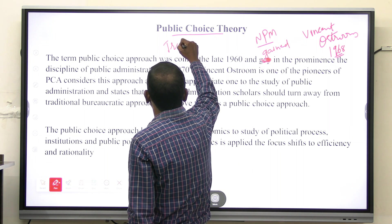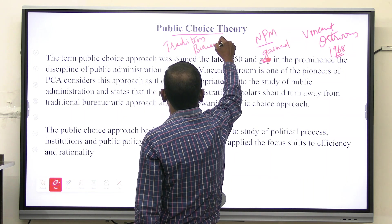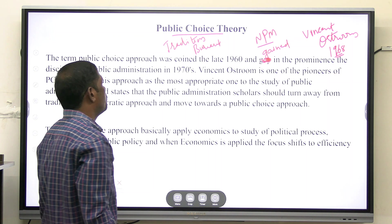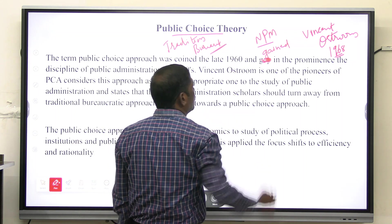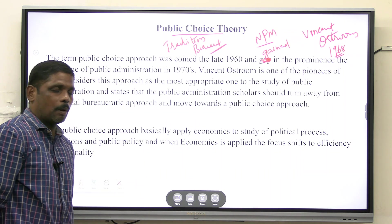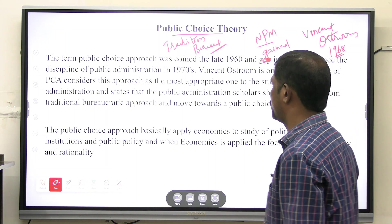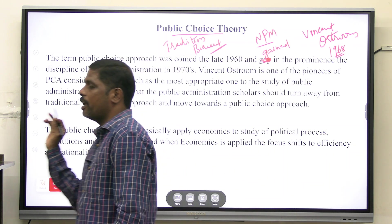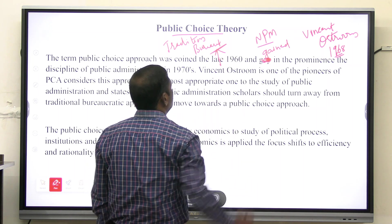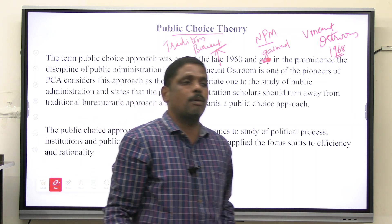Traditional public administration, which is dominated by Weberian bureaucracy, is seen as the reason for the failure of public administration. According to proponents of public choice theory, it is the traditional bureaucratically organized public administration which is the reason for this failure.